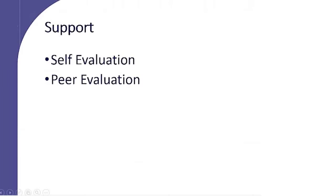I could also provide support by having students do a self-evaluation or a peer evaluation using the rubric. Focusing on the rubric, students could give themselves or their peer a score for each criterion and identify one area they feel is their strength and one area they feel they could improve before their final submission. If it's a peer evaluation, they might also include a question they have about the tribute or a suggestion for a way to improve it. Including each of these support activities will provide students with access points to help them be more successful.